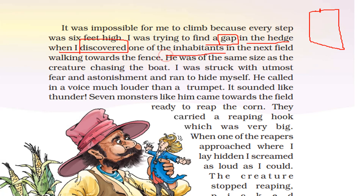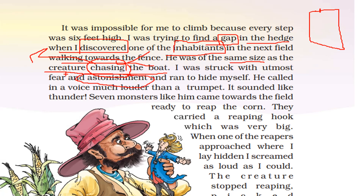He was of the same size as the creature chasing the boat — chase matlab kisi cheez ko pakadna, daudana, usse paane ki koshish karna. Usi size ka ek aur aadmi Gulliver ko khhet mein dikhayi diya. I was struck with utmost fear and astonishment and ran to hide myself — astonishment means achambhit reh jaana, aashcharya. Ek toh woh bahut dar gaya aur aashcharya se bhar gaya, aur daud kar kahin chhup gaya.